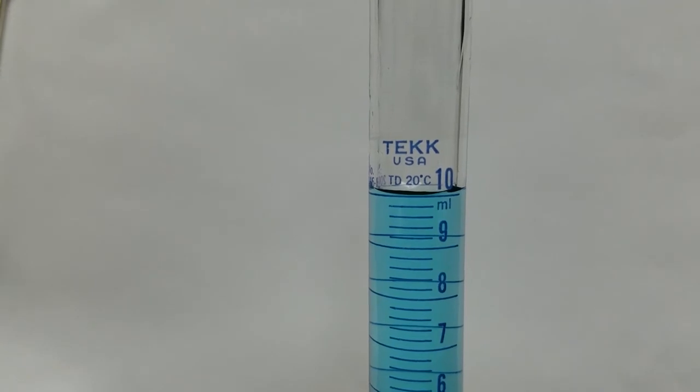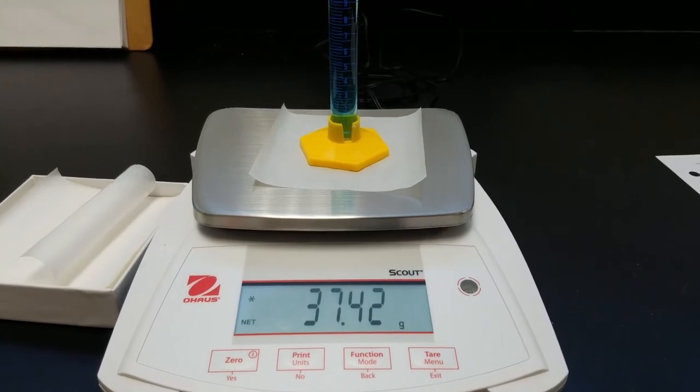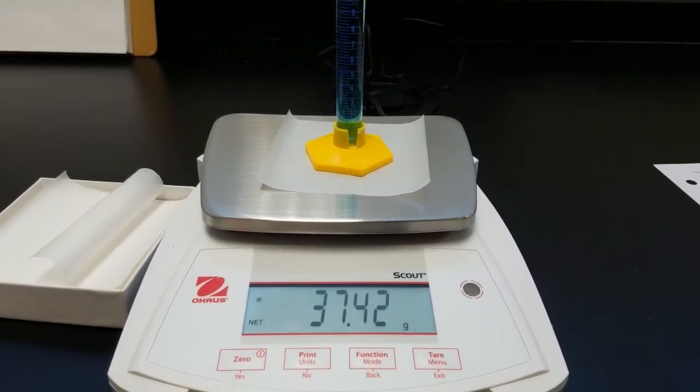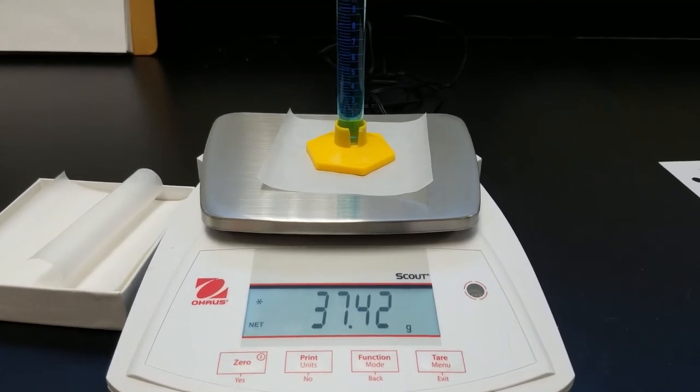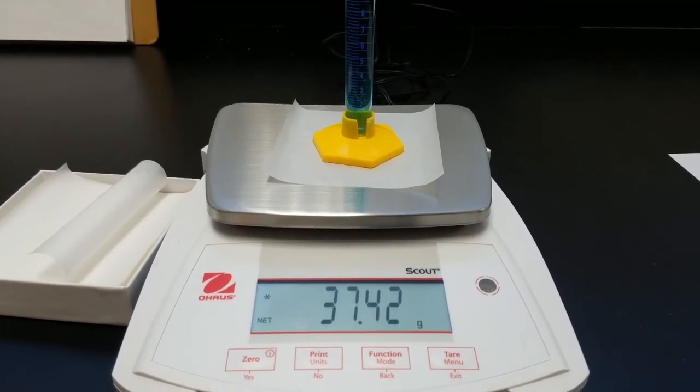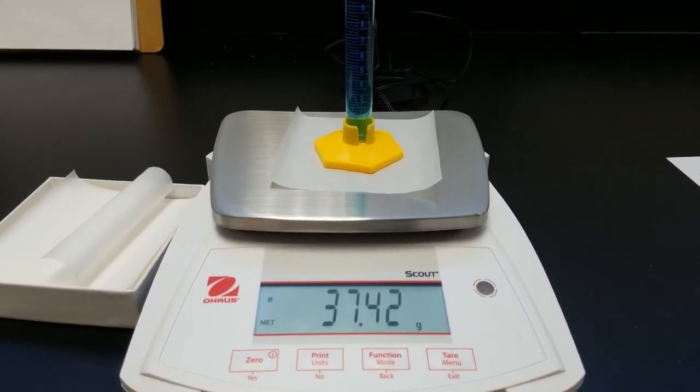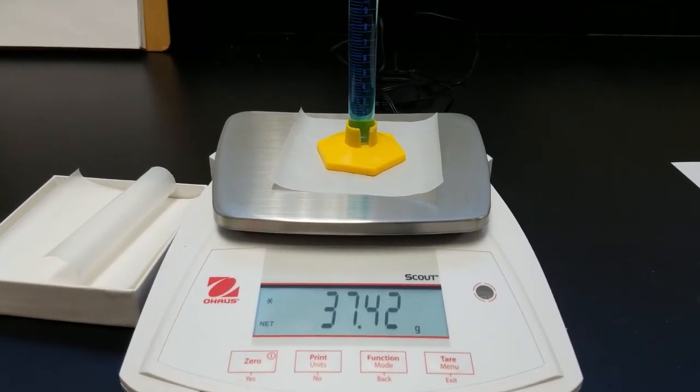Approximately two more milliliters have been added. Record the volume. Mass of approximately 10 milliliters of water. This data can now be used to do additional calculations as directed in your lab manual in Excel.